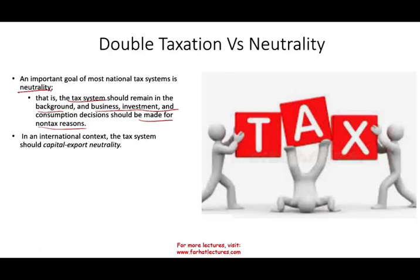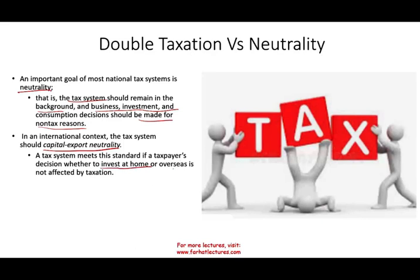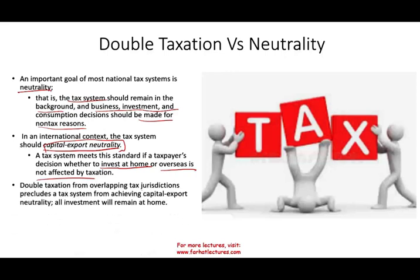From an international perspective, the concept of capital export neutrality says that a taxpayer's decision whether to invest at home or overseas should not be affected by taxation. Double taxation from overlapping tax jurisdiction prevents a tax system from achieving capital export neutrality — because paying taxes twice creates a disincentive, keeping all investment at home and reducing international trade. So most countries have one or more mechanisms for eliminating double taxation.